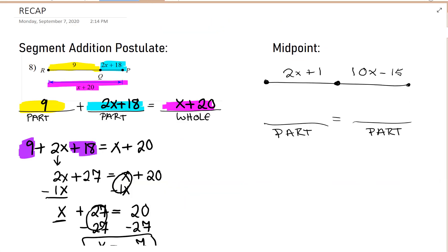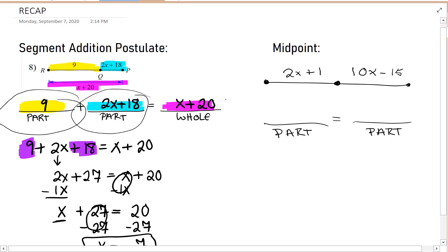So to recap, segment addition is taking the part plus the part and making it equal to the length of the entire line segment. For midpoint, we know that the point is exactly in the middle. So we make part equal part.